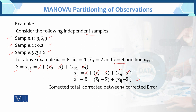So xᵢⱼ: if we suppose xᵢⱼ minus x̄, this equality gives us the corrected total. This is the corrected between values, and this is the corrected error or within term.